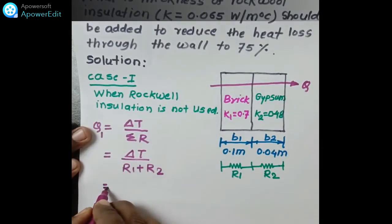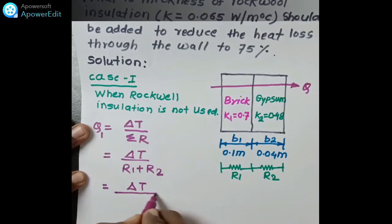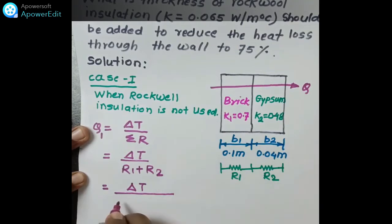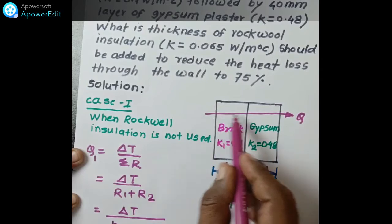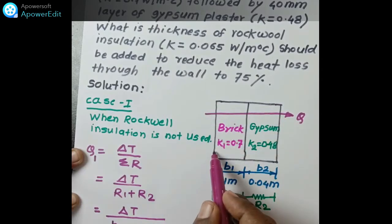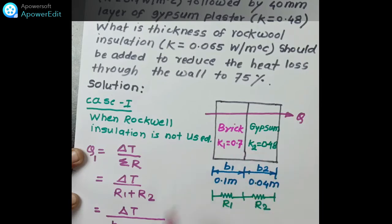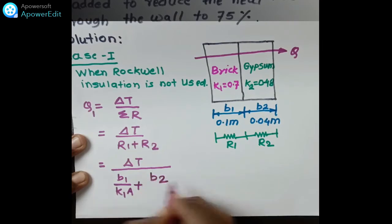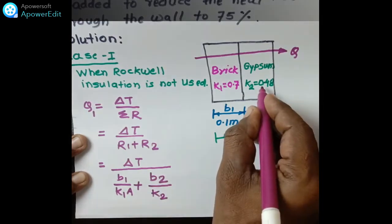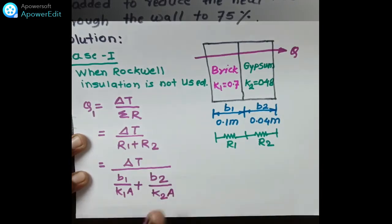For a wall structure, the thermal resistance formula is B/(kA). For the first layer it is B1/(K1·A), and for the second layer it is B2/(K2·A). The area A is perpendicular to the direction of heat flow and is the same at all interfaces. So the formula for Q1 is ΔT divided by [B1/(K1·A) + B2/(K2·A)].